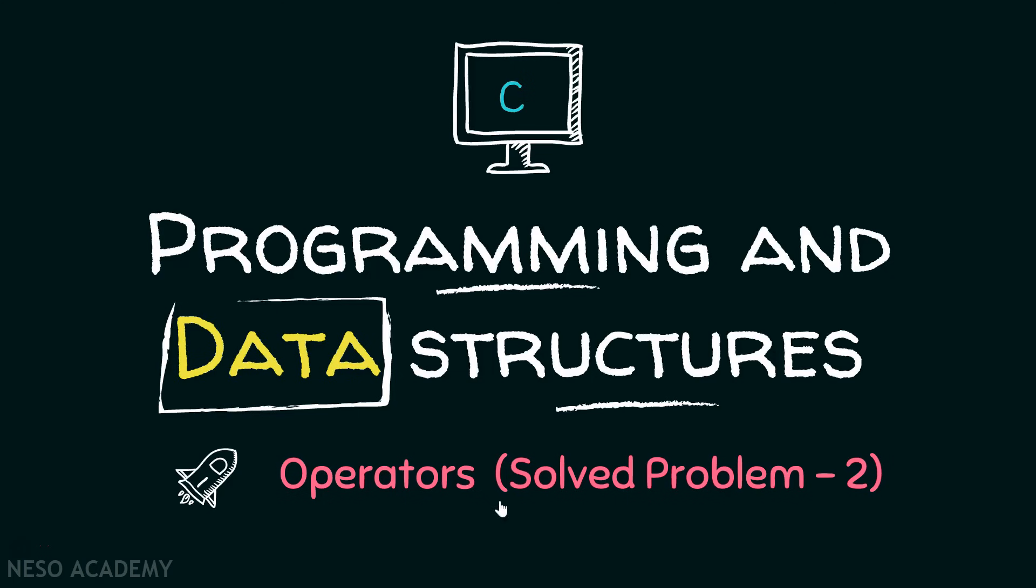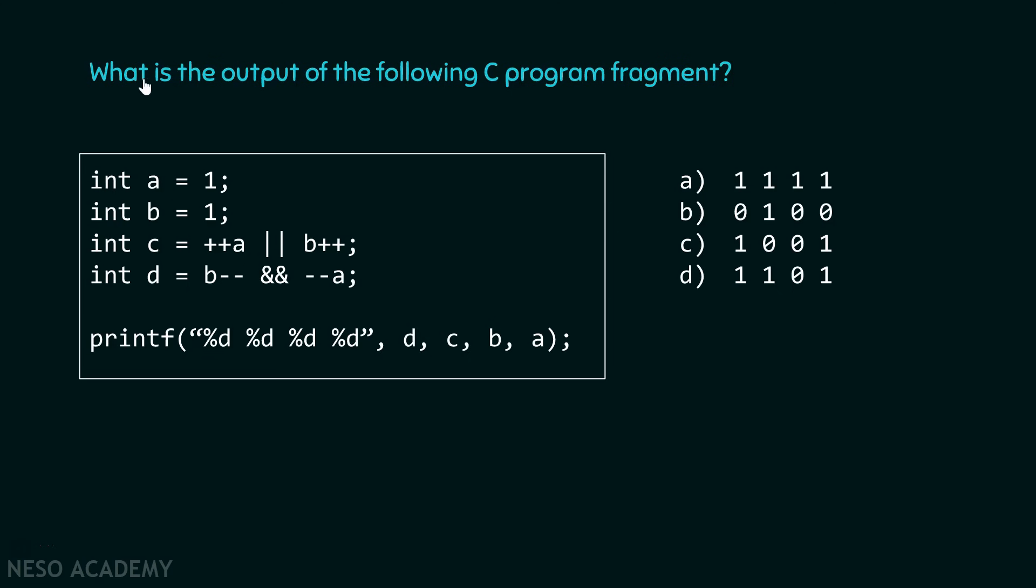Let's consider one problem related to operators in C. What is the output of the following C program fragment? This is the C program fragment available to you. What would be the output of this particular program? Is it A? 1 1 1 1. Is it B? 0 1 0 0. Is it C? 1 0 0 1. Or is it D? 1 1 0 1. I would highly encourage you to please pause the video for a while and try to answer this particular question on your own.